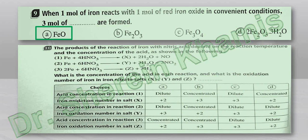Question number 10: the product of reaction of iron with nitric acid depends on the reaction temperature and the concentration of acid. We have iron + 4HNO₃ giving X + 2H₂O + NO; iron + 6HNO₃ giving Y + 3H₂O + 3NO₂; and 2Fe + 6HNO₃ giving Z + 3H₂O. What is the concentration of acid in each reaction and what is the oxidation number of iron in iron nitrate salts X, Y, and Z?